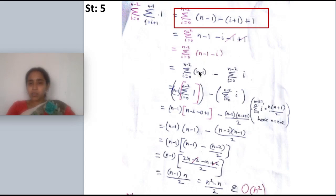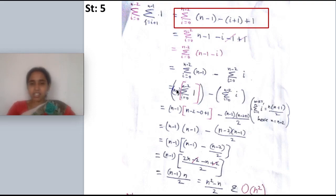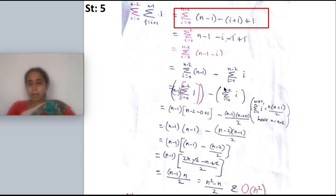For the first part, n minus 1 is in terms of n, so it can be taken outside the summation: (n minus 1) times summation of 1. For the summation of 1, the formula is upper limit minus lower limit plus 1, giving n minus 2 minus 0 plus 1, which equals n minus 1. For the summation of i, the formula is n(n+1)/2, but here n is replaced by n minus 2, giving (n minus 2)(n minus 2 plus 1)/2.